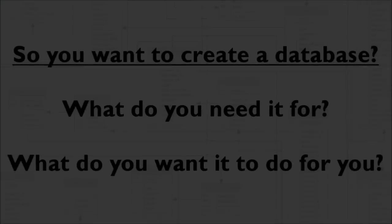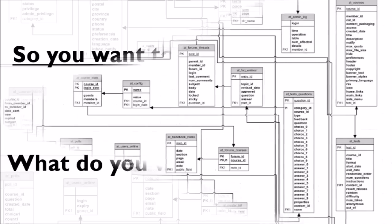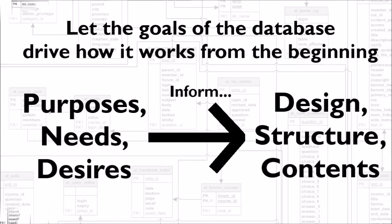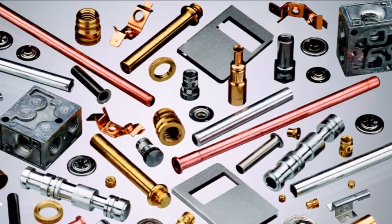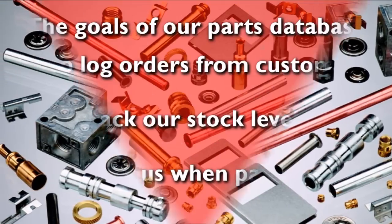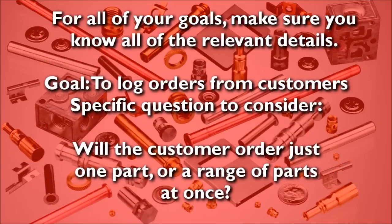Step one: make a plan. It might sound obvious, but one of the most important points when creating any database is deciding exactly what you need it to do and what it's for. A well-designed database will be simpler to maintain and to adapt later on if your requirements alter, and getting the design right is much easier once you understand the purpose of the database. In this tutorial we'll be using the example of a database managing supplies of parts. We wanted to be able to perform three main tasks: log orders from customers, track our stock levels, and warn us when parts need to be reordered.